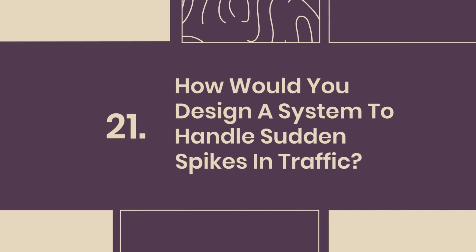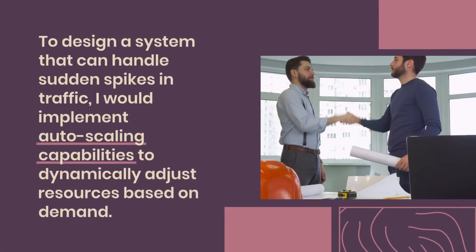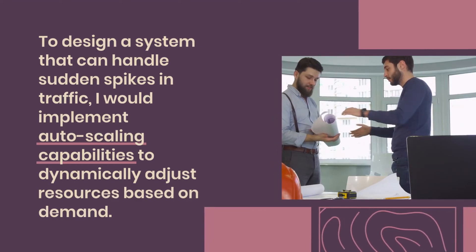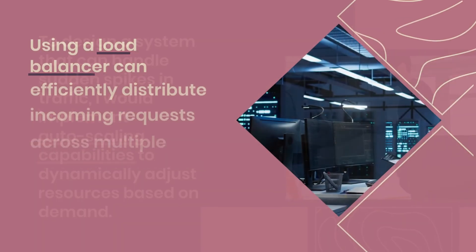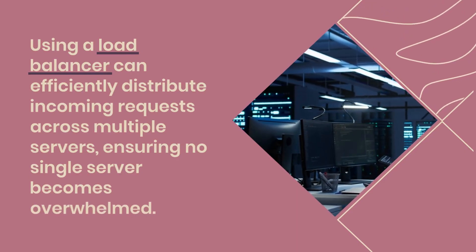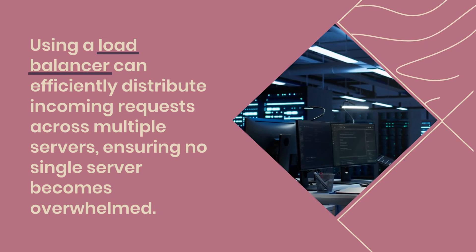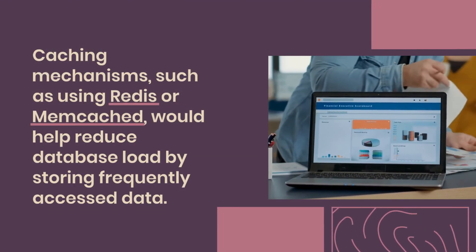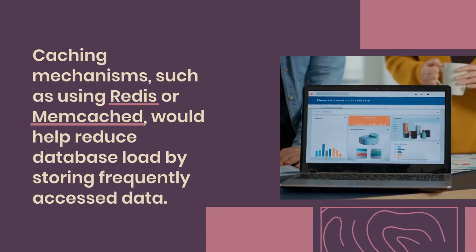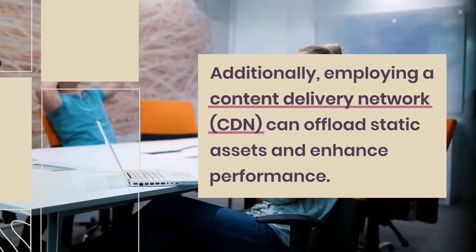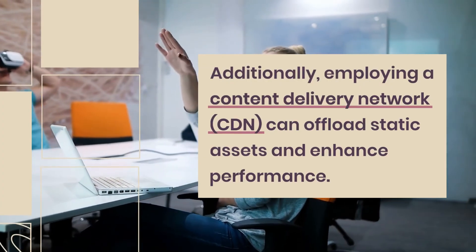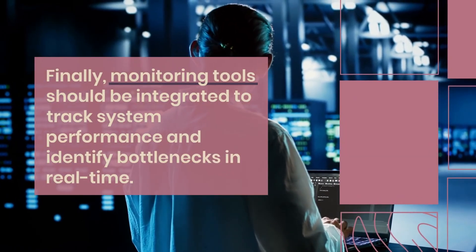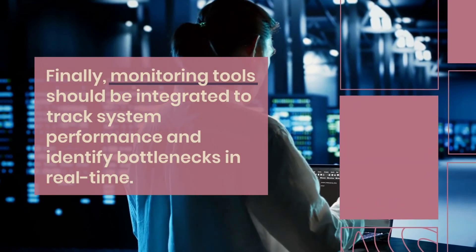Question 21: How would you design a system to handle sudden spikes in traffic? To design a system that can handle sudden spikes in traffic, I would implement auto-scaling capabilities to dynamically adjust resources based on demand. Using a load balancer can efficiently distribute incoming requests across multiple servers, ensuring no single server becomes overwhelmed. Caching mechanisms, such as using Redis or Memcached, would help reduce database load by storing frequently accessed data. Additionally, employing a content delivery network (CDN) can offload static assets and enhance performance. Finally, monitoring tools should be integrated to track system performance and identify bottlenecks in real-time.